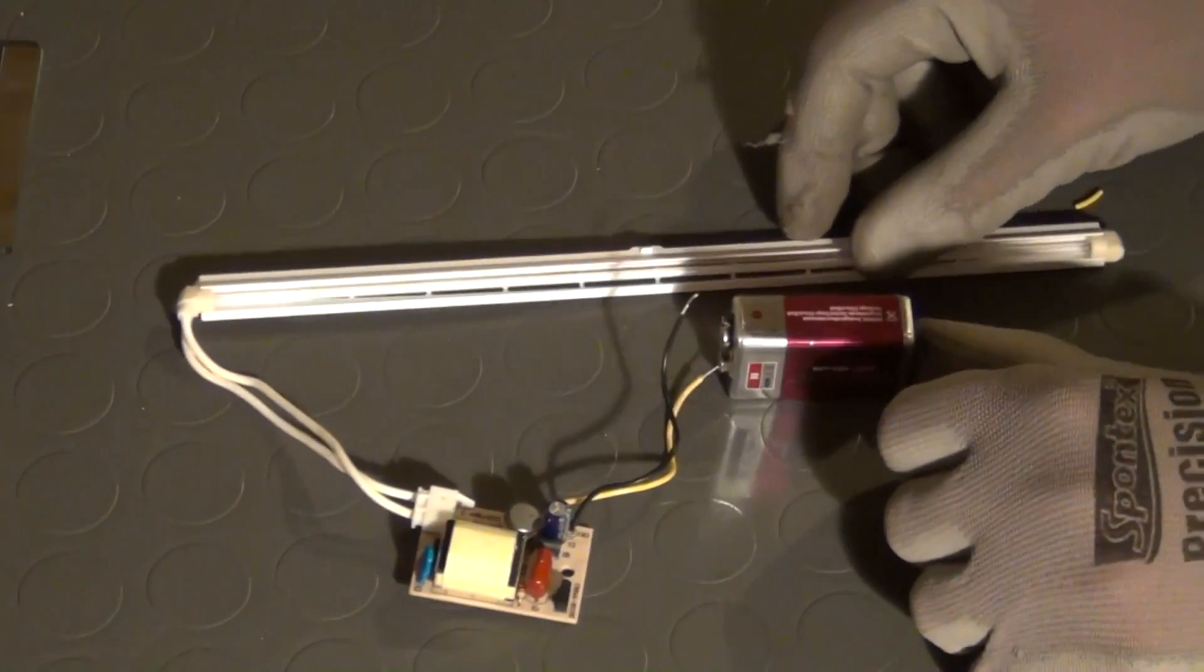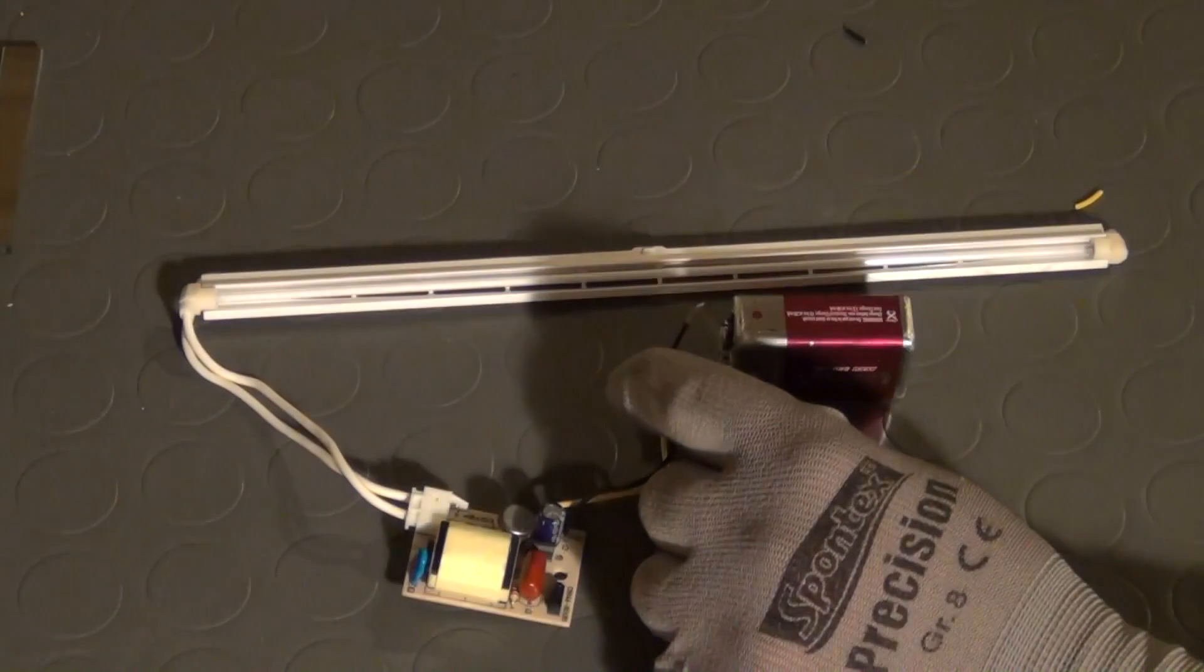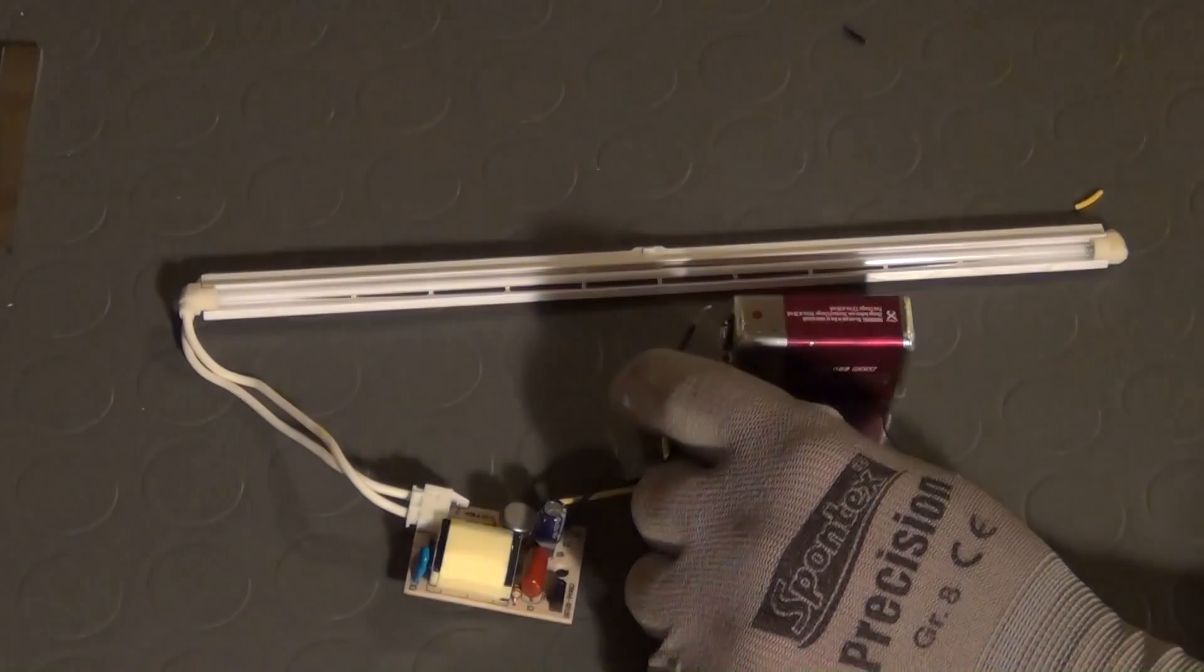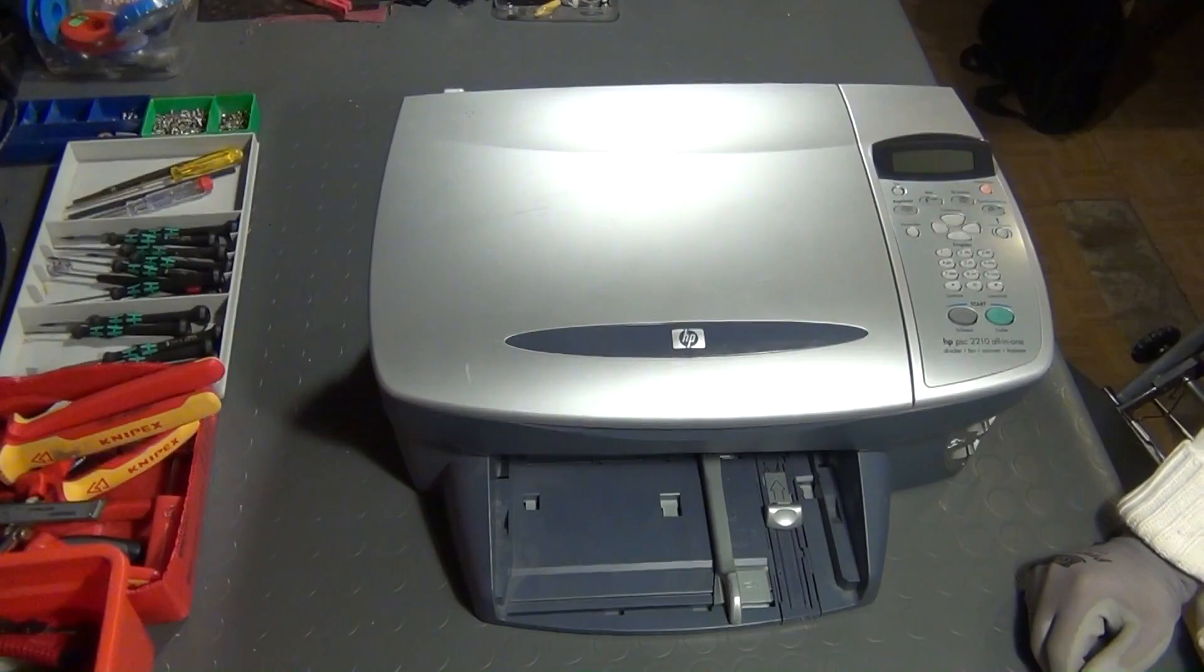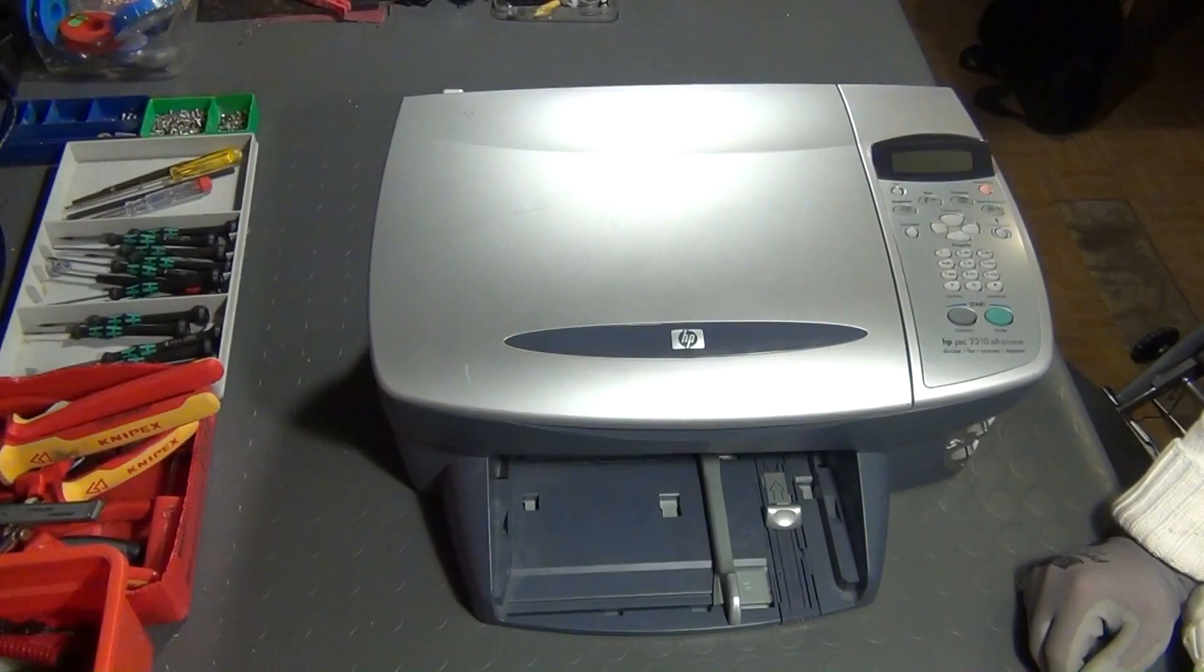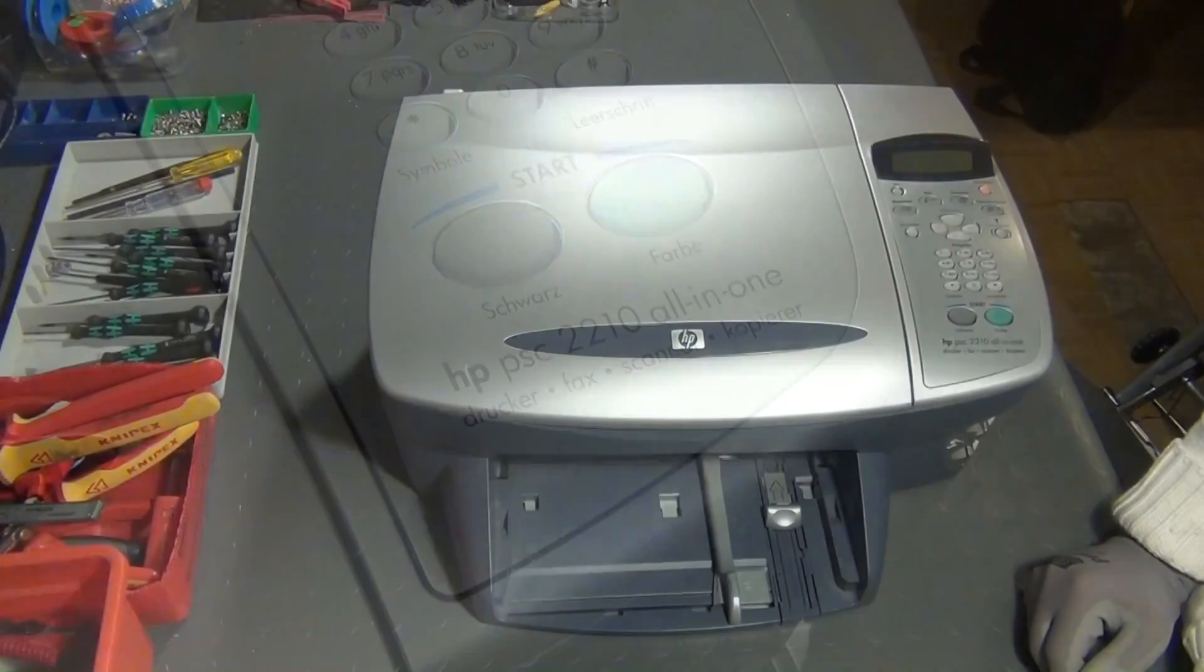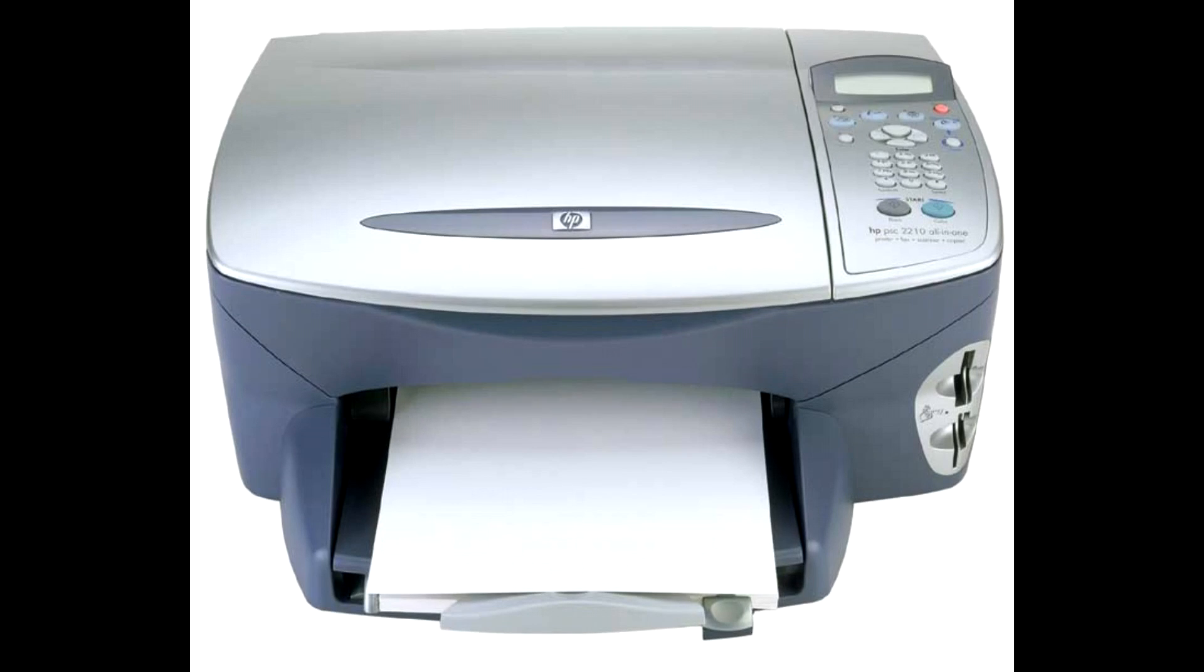In the video following this one, I will take a closer look at some of these parts, analyze them, and finally make some suggestions what they could be reused for. For demonstration purposes, I will now disassemble this multifunction device which includes an inkjet printer as well as a scanner unit. It is an HP brand PSC 2210 which was built in 2002.